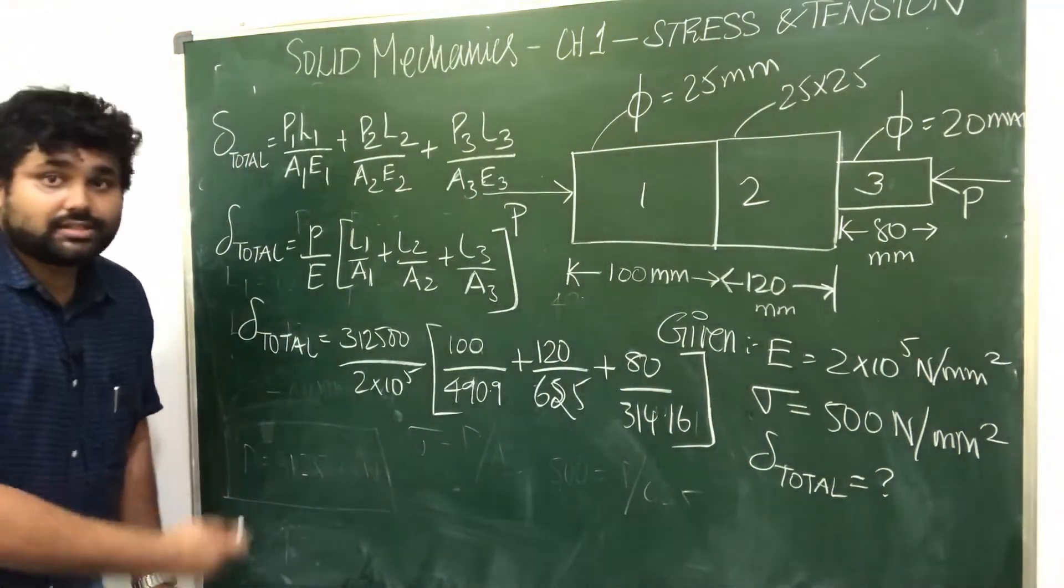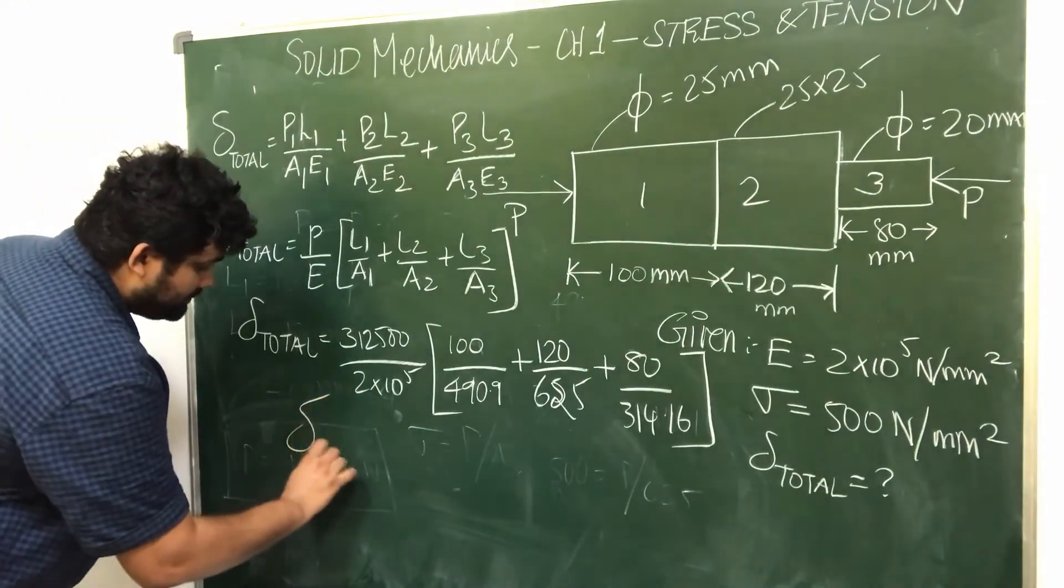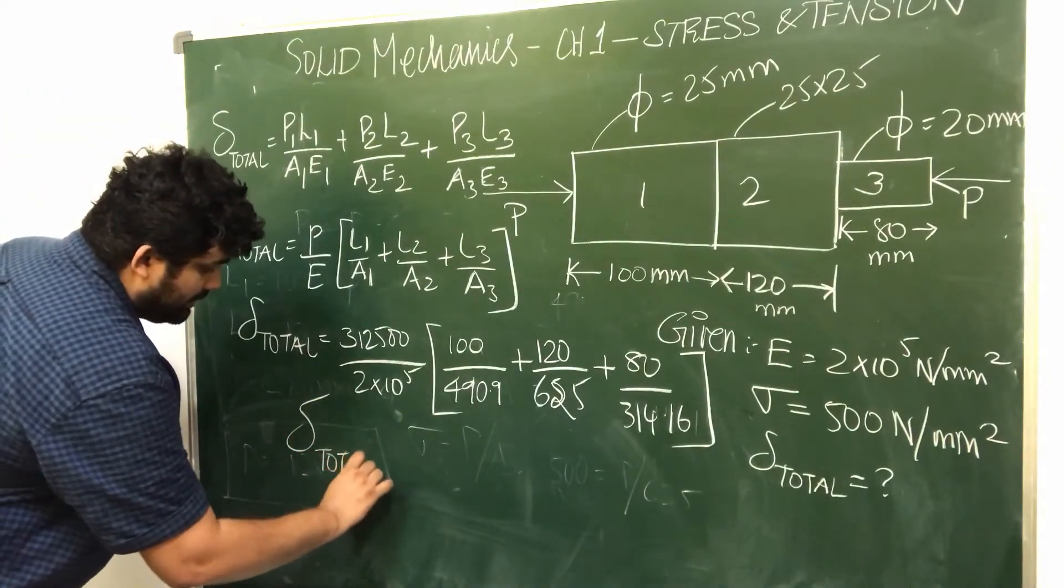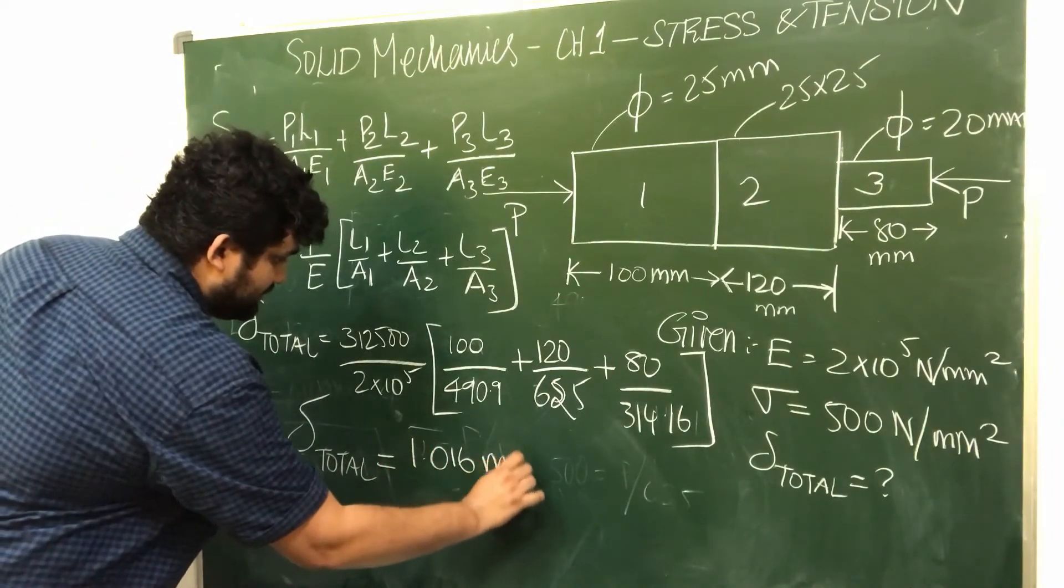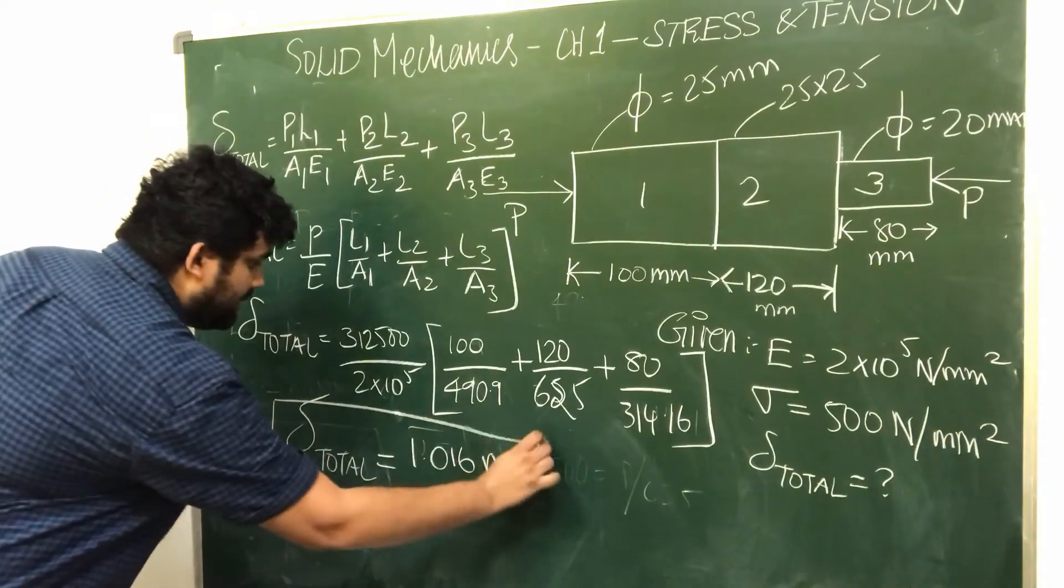So it is a calculator solve problem. So total deflection, after solving you will get the answer as 1.016 millimeter.